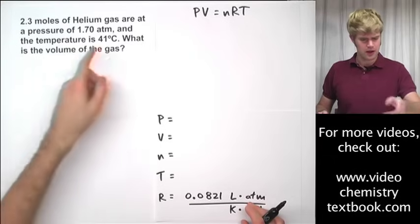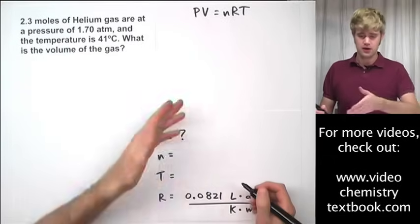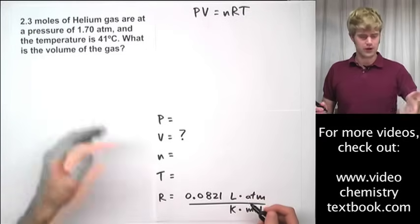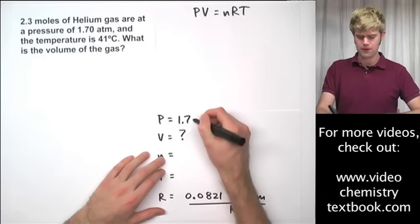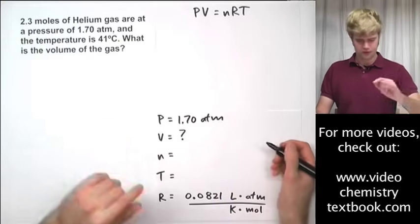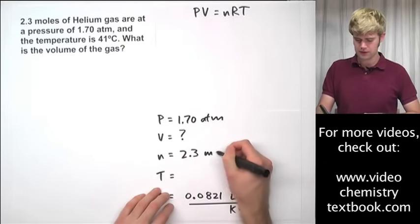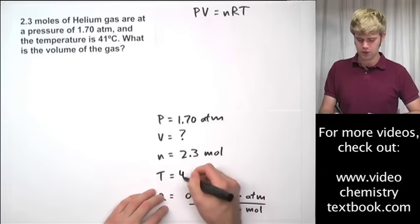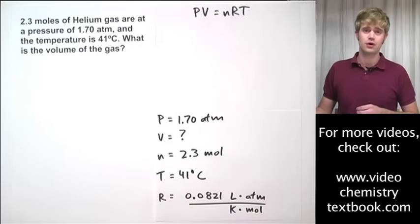Okay. So anyway, R is right here. What's the volume of the gas? V is going to be the value that I'm solving for. Now let's plug the other ones in. All right. So we have a pressure of 1.70 atm. We have the amount of gas is 2.3 moles. And the temperature is 41 degrees Celsius, which you probably already know we're going to have to end up converting to Kelvin.